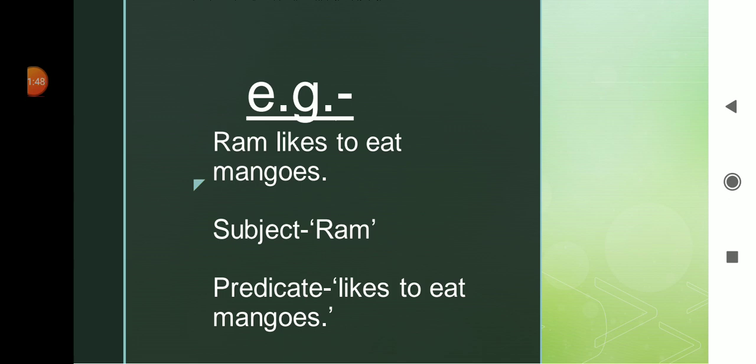Here we may see one example. Ram likes to eat mangoes. Ram is the subject of the sentence because the sentence is telling something about the liking of Ram. And what is it telling? It says that Ram likes to eat mangoes. So in this example, the subject is Ram and the predicate is likes to eat mangoes.